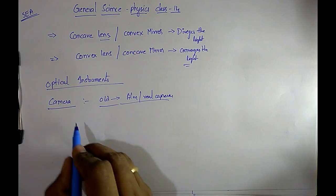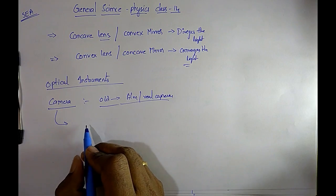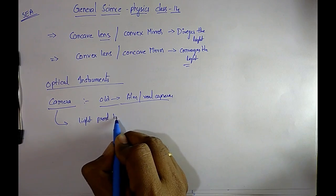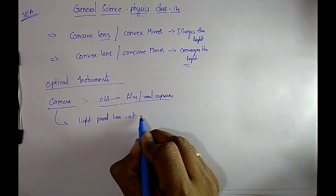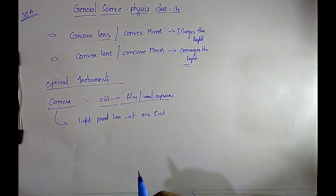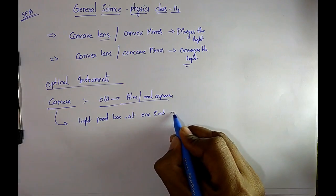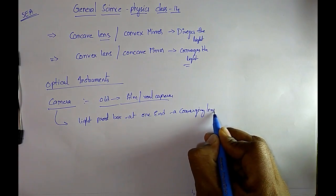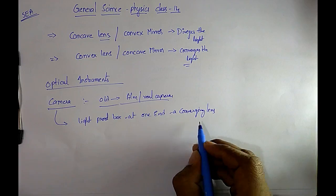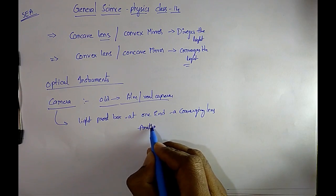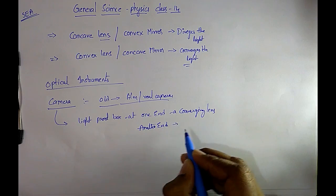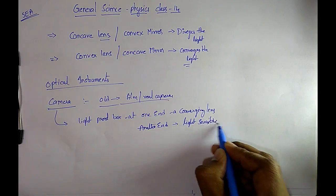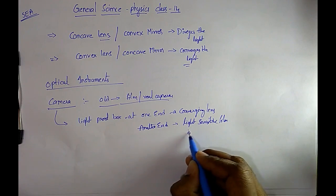The camera consists of a light-proof box. At one end, a converging lens is fitted, and at the other end a light-sensitive film is fitted, opposite to the lens system.